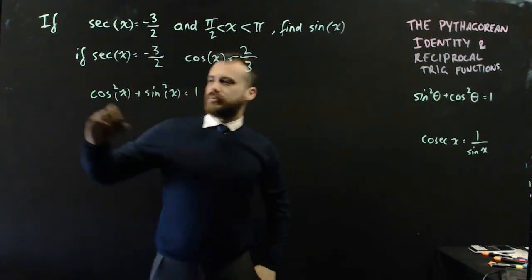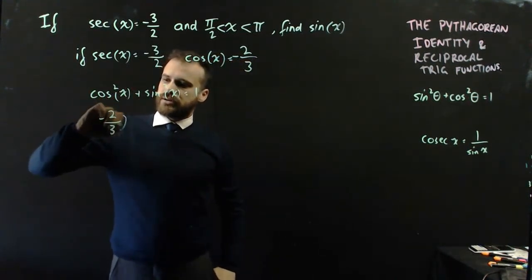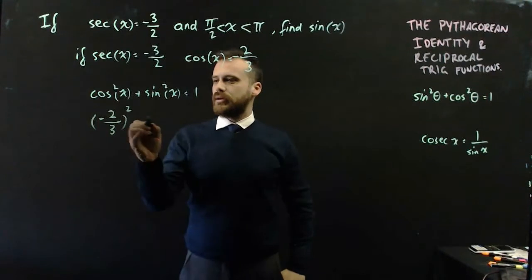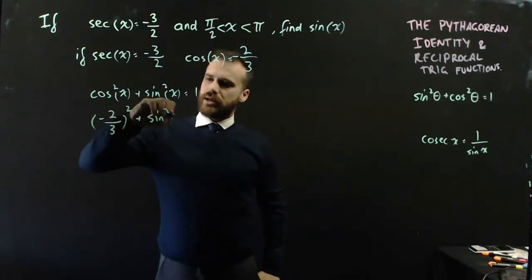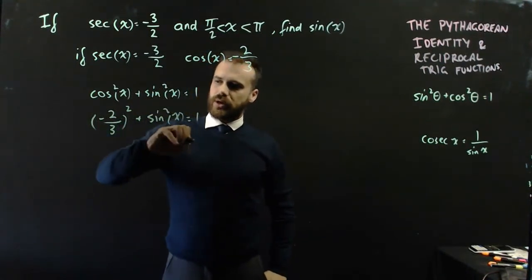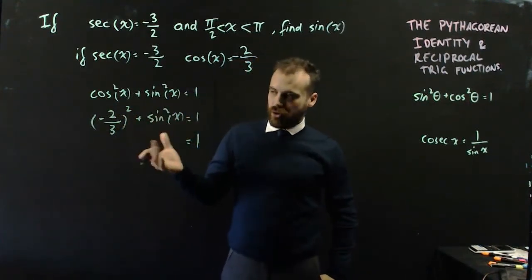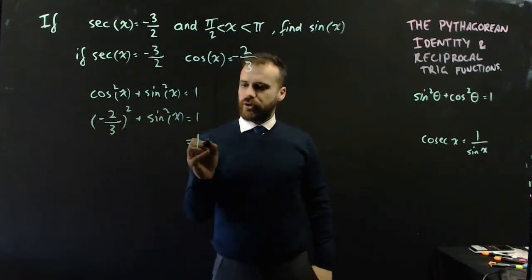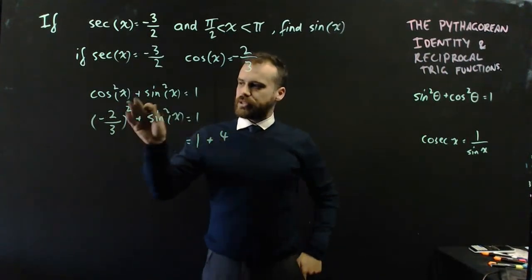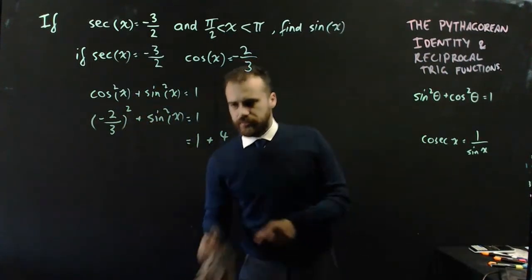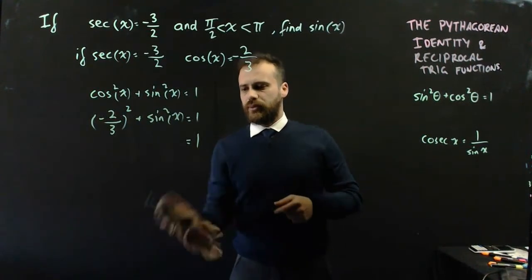Okay, so cos squared x, we have negative 2 on 3 squared plus sine squared x equals 1. Now, that's going to be 1. Negative 2 on 3 squared is going to be positive, positive 4 on 9. But it's going to be positive on that side, so it's going to be negative when I move it over.